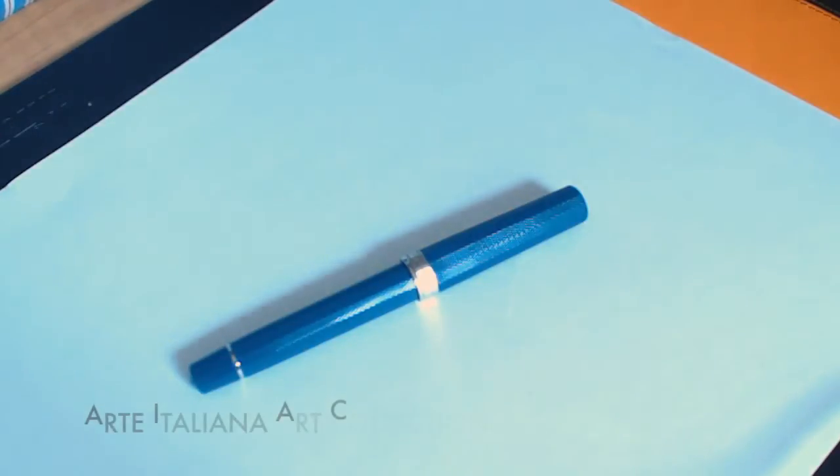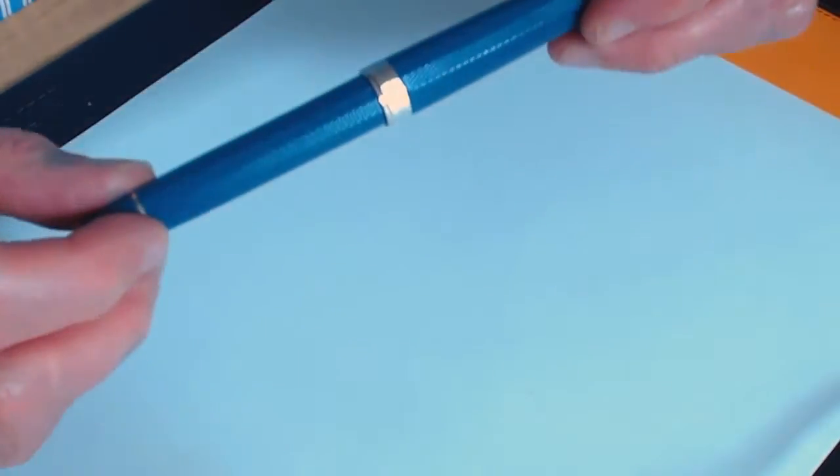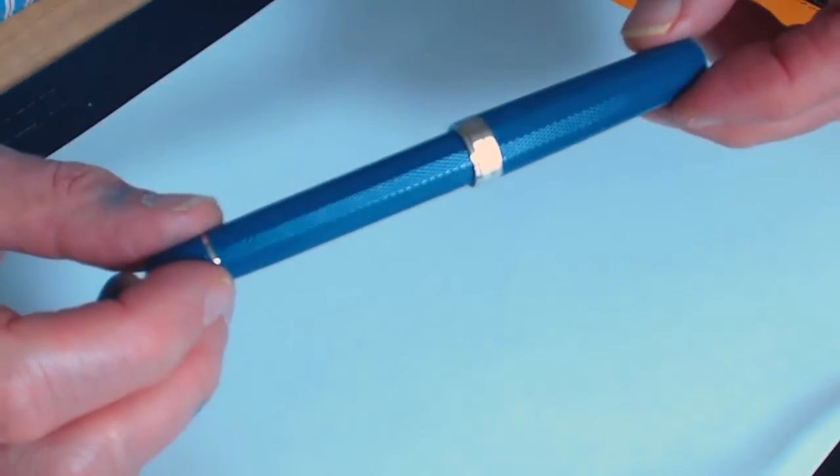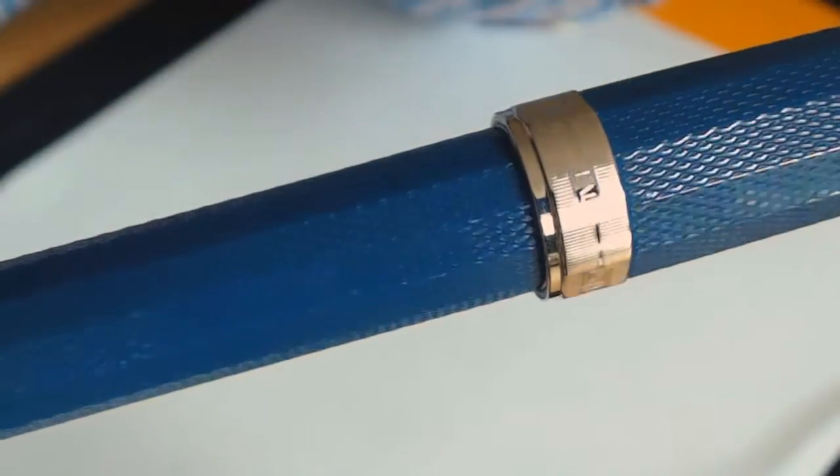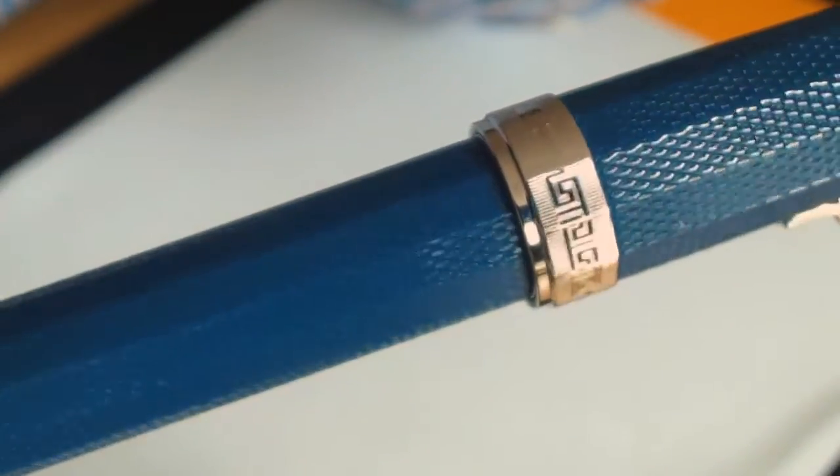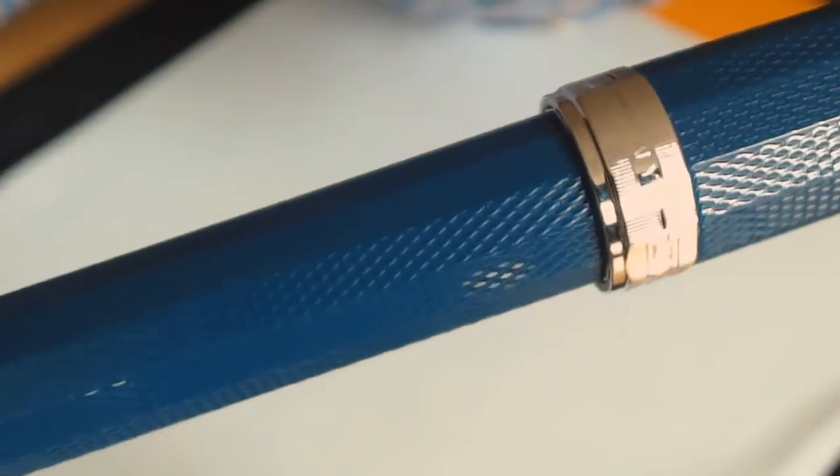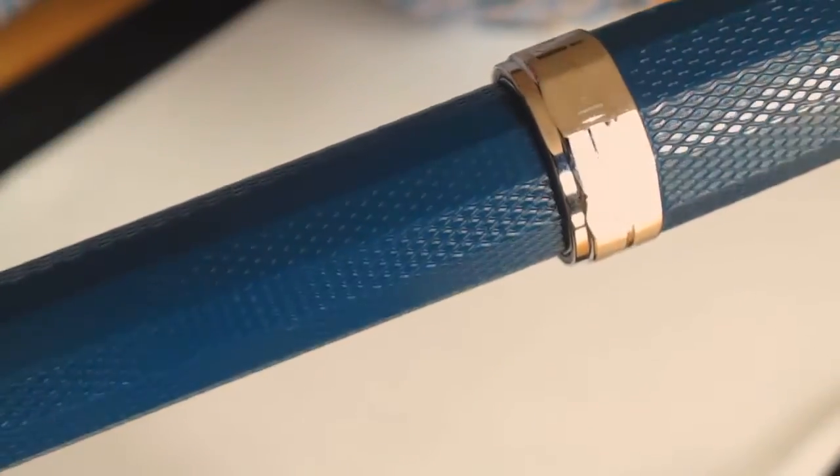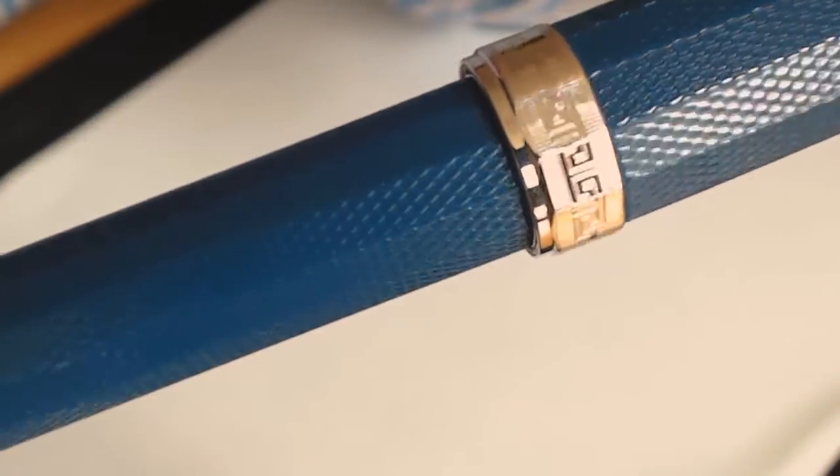So here we are with the OMAS Arte Italia Art Series fountain pen. It's the same size and shape as the classic Milord. But you'll notice, firstly, there's this rather attractive galosh pattern on it. And secondly, there's been some really nice work done around the band. Hopefully you can see that there and see the attention to detail on it. Really nice looking.